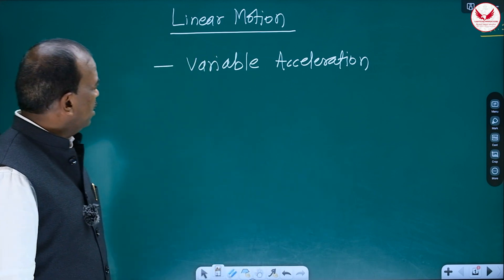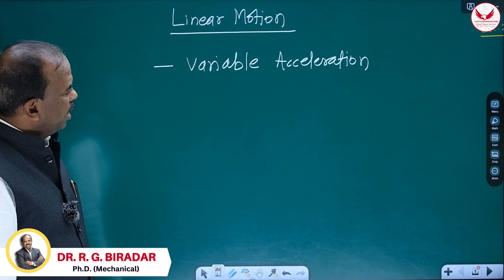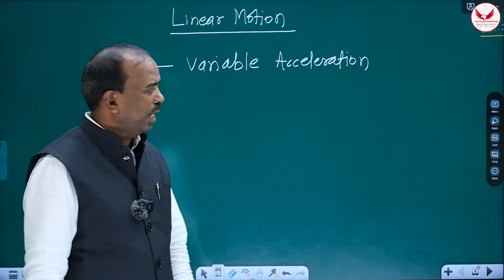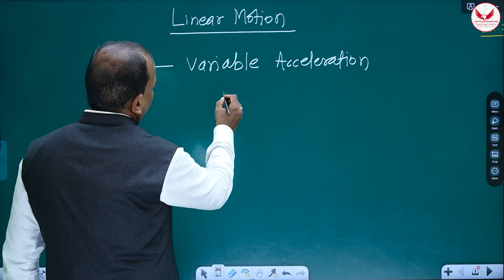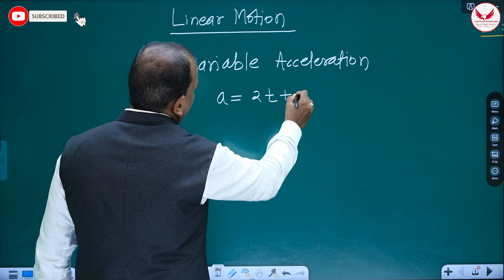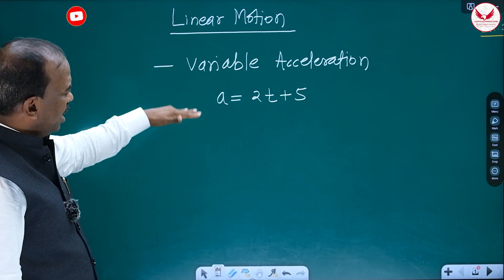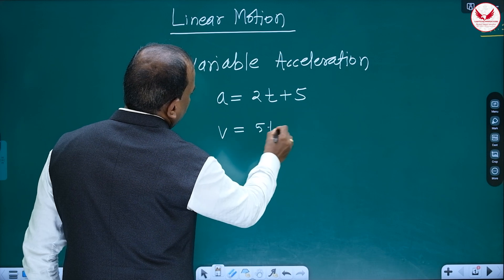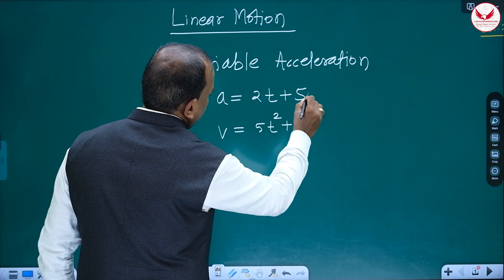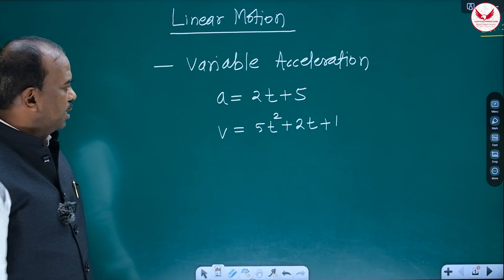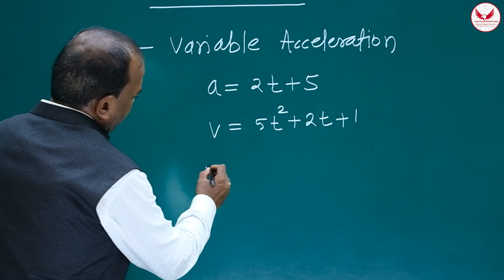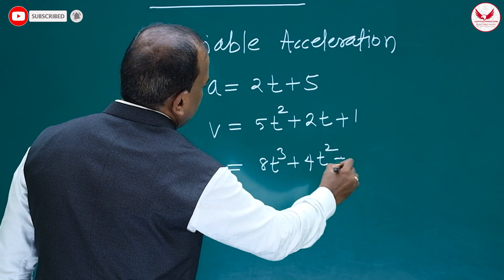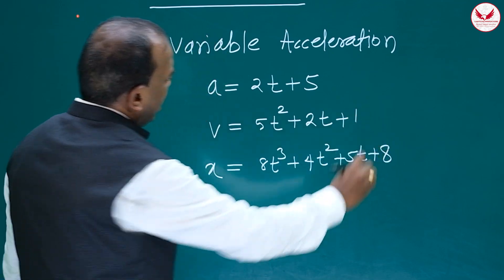Hello friends, today we will see the problems of linear motion, specifically the variable acceleration part. Variable acceleration means acceleration is changing with respect to time. In the equation it will be something like a = 2t + 5, or v = 5t² + 2t + 1, or displacement s = at³ + 4t² + 5t + 8.